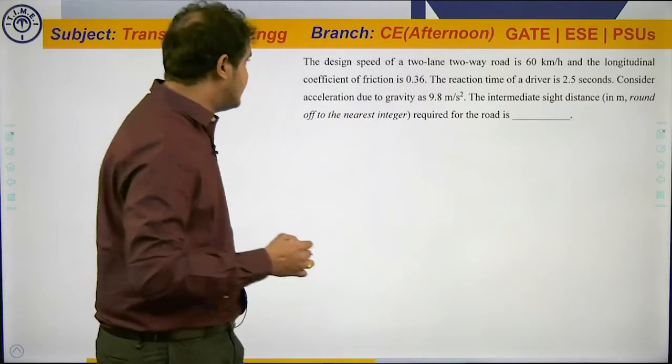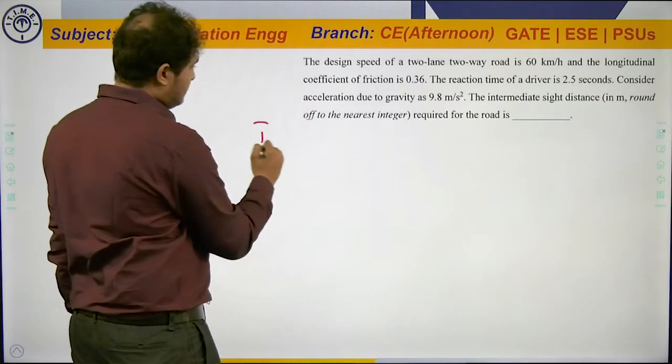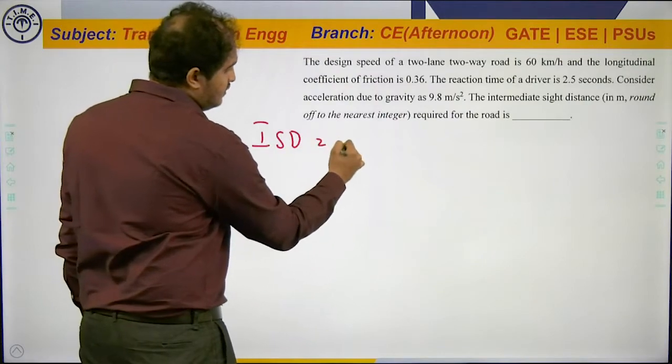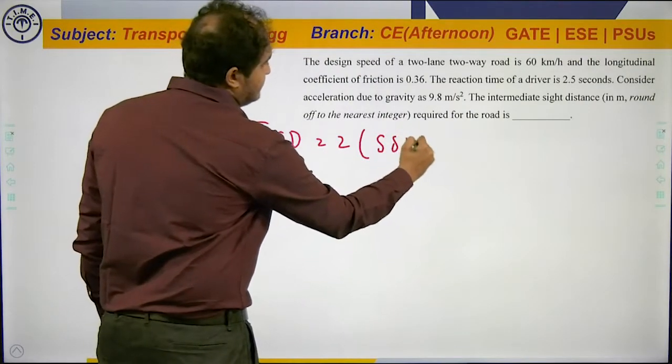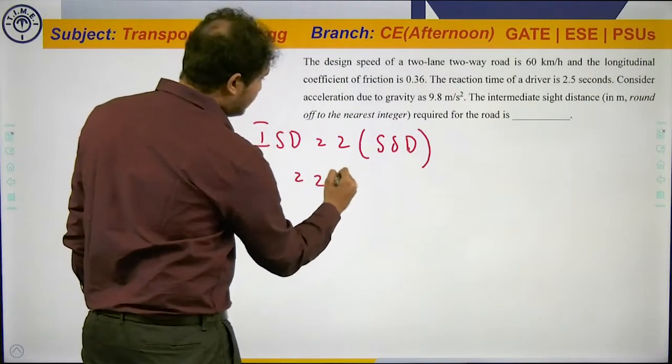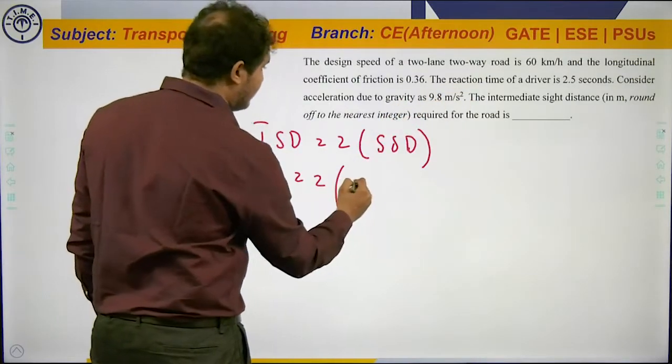ISD, intermediate sight distance, is to be determined. We know ISD equals 2 times SSD, that is equal to 2 times (VT plus V squared by 2gf).